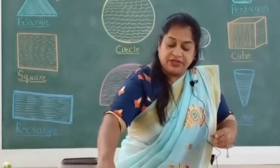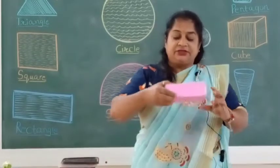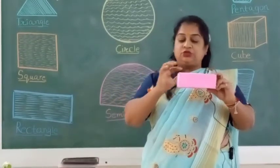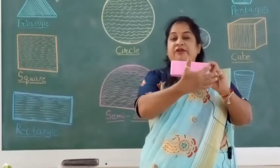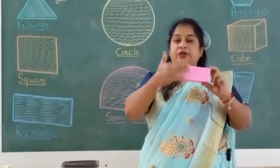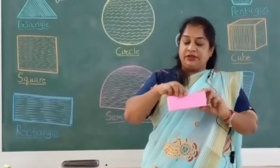Then after square there is a rectangle. See, rectangle has also four sides. One, two, three and four. In rectangle two opposite sides are equal.